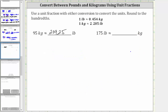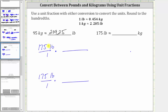And now let's convert 175 pounds to kilograms. We first write 175 pounds as a fraction with a denominator of one. And now we multiply by a unit fraction to perform the conversion. Notice how here we have pounds in the numerator, and we want pounds to simplify out, leaving us with kilograms, which means this time in the unit fraction, we must have pounds in the denominator and kilograms in the numerator. Using the first conversion, one possible unit fraction would be 0.454 kilograms over one pound. Using the second conversion, a second possible unit fraction would be one kilogram over 2.205 pounds. Again, in both cases, notice how we have pounds divided by pounds, and therefore the units of pounds simplify out, leaving us with kilograms.